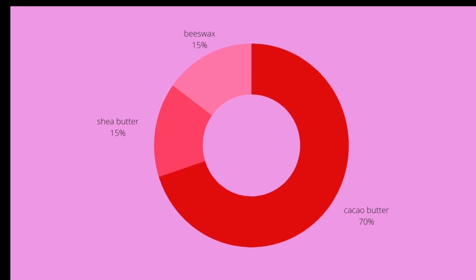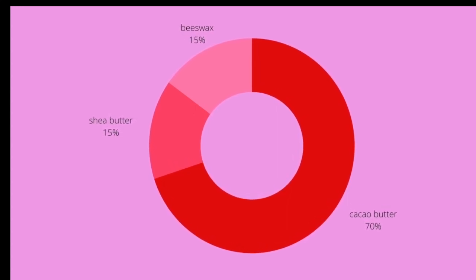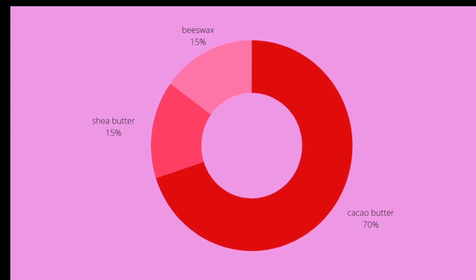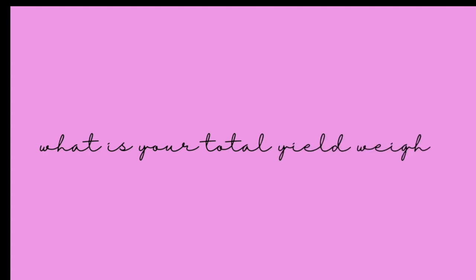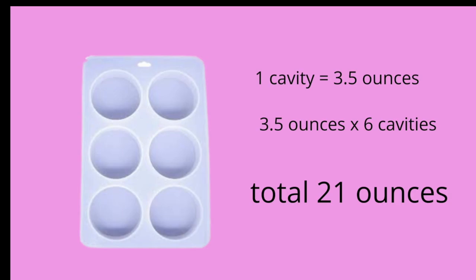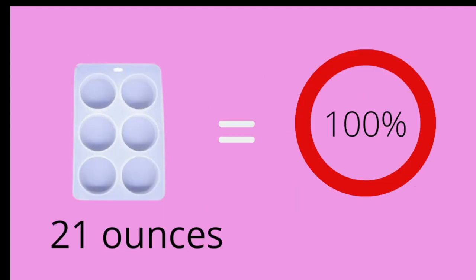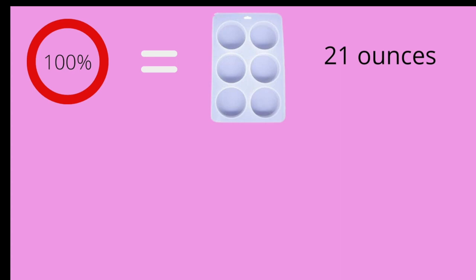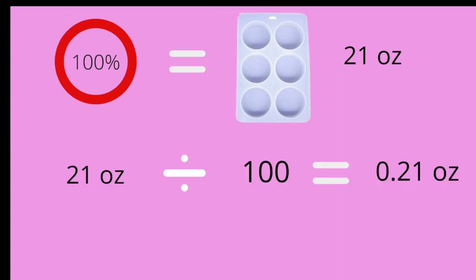Let's have a look at a visual breakdown of our recipe for illustration. The first thing we want to establish is what is the weight of your yield. Let's say you use this particular mold that holds 3.5 ounces in each cavity. Multiplied by 6, you would get a total yield of 21 ounces. These 21 ounces are your 100%. Now we take the total capacity of the mold — meaning 21 ounces — and divide it by 100. We get 0.21 ounces.